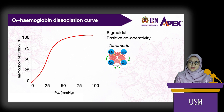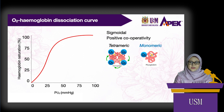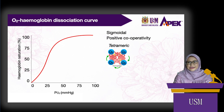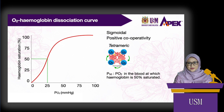Each oxygen molecule attached to hemoglobin increases hemoglobin's affinity for the next oxygen molecule — this is positive cooperativity. In comparison, myoglobin is monomeric, binding only one oxygen molecule, so there is no positive cooperativity and its curve is not sigmoidal. A significant point on the oxygen-hemoglobin dissociation curve is the P50 — the partial pressure of oxygen at which hemoglobin is 50% saturated. On this curve, that value is 25 mmHg, so the P50 is 25 mmHg.